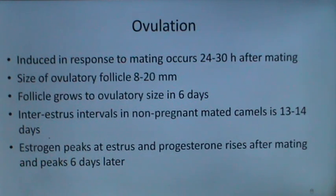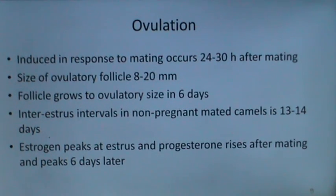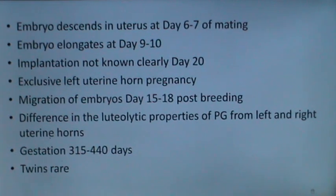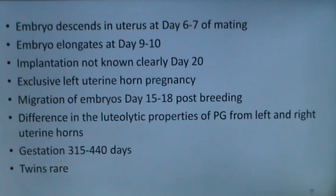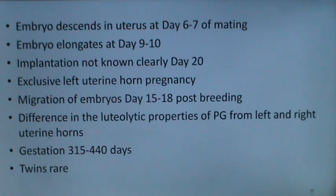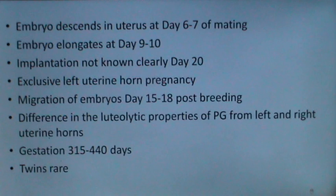Oestrogen peaks at estrus and progesterone rises after mating, peaking six days later. The embryo descends into the uterus at day 6 to 7 of mating and elongates at day 9 to 10. Implantation is presumed to occur at around day 20. A speciality of camel reproduction is the exclusive left uterine horn pregnancy — even if ovulation occurs in the right ovary, the embryo will migrate from the right uterine horn to the left uterine horn for establishment of pregnancy, occurring at day 15 to 18 post-breeding.